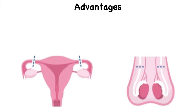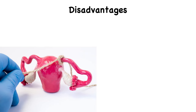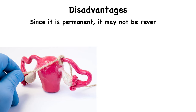The advantages of sterilization are that it is highly effective at preventing pregnancy and is a permanent method that does not require any maintenance. The disadvantages include that since it is a permanent method, it may not be the best option for everyone, as it cannot be reversed and it requires surgery.